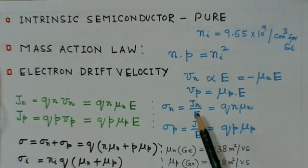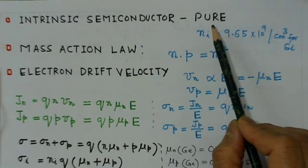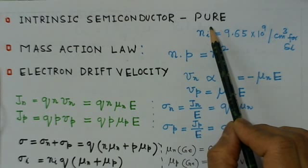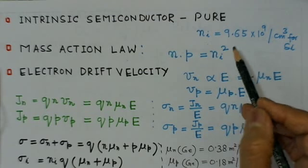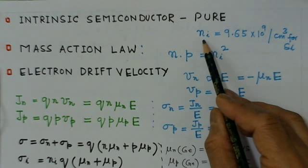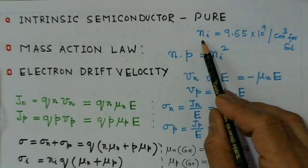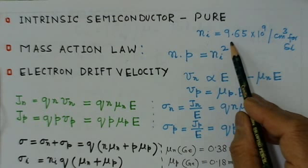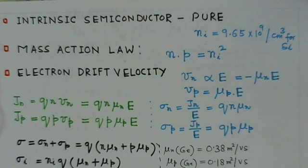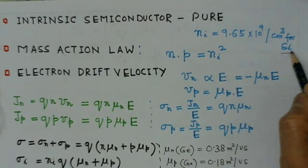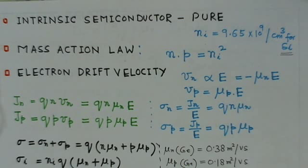An intrinsic semiconductor is an extremely pure semiconductor. Its density of electrons per unit volume is typically 9.65×10⁹ per cm³ for silicon — this is the kind of electron density available.